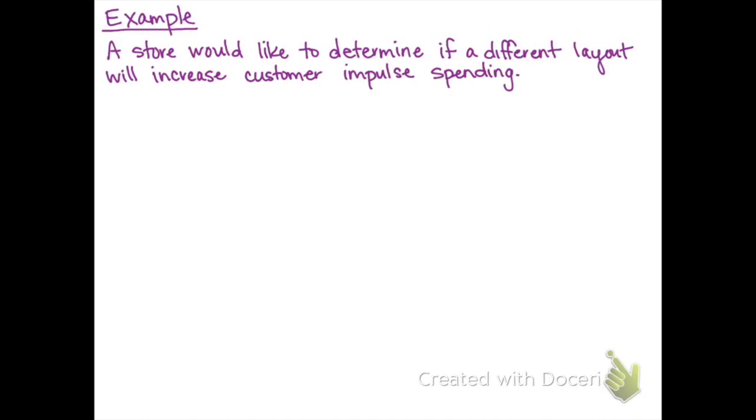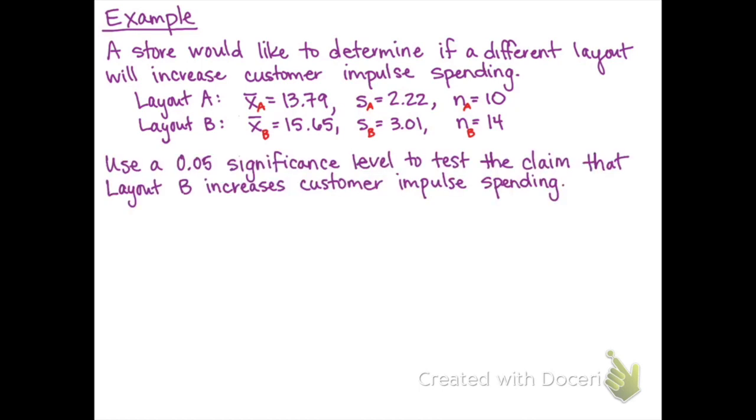Let's look at an example. A store would like to determine if a different layout will increase customer impulse spending. They collect data for two different layouts, A and B, and find the following sample statistics. We can label each of these sample statistics with subscripts A or B depending on the layout that they represent.